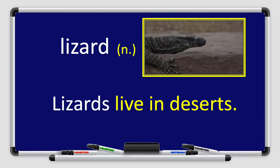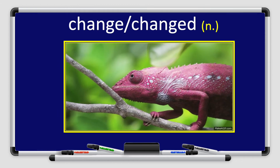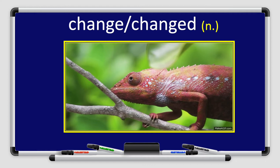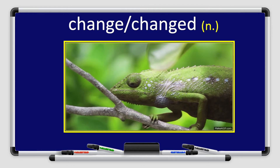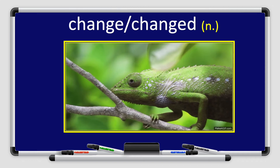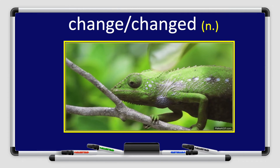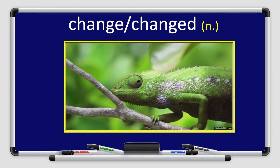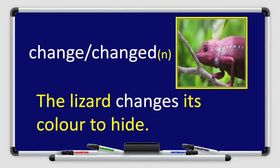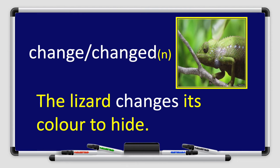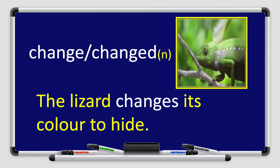Can you use the word lizard in a sentence? Great job boys and girls. Now let's move to the next word. We have the word change. Change — in the present it is change, in the past I will say changed. Repeat after me: change, change. And in the past: changed. Change is a verb. Look at the picture — it changed its color. The lizard changes its color to hide.